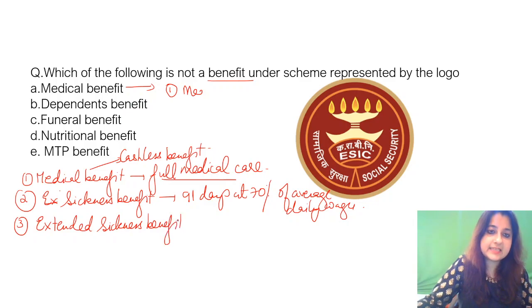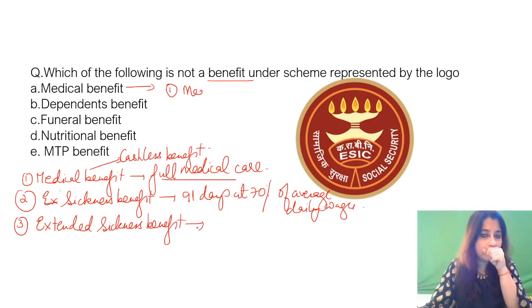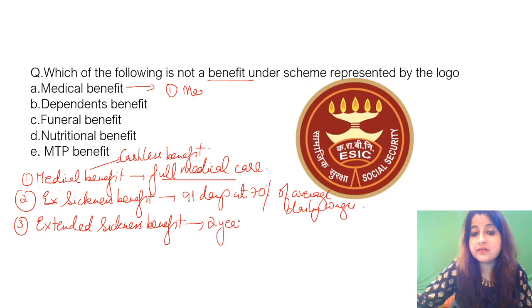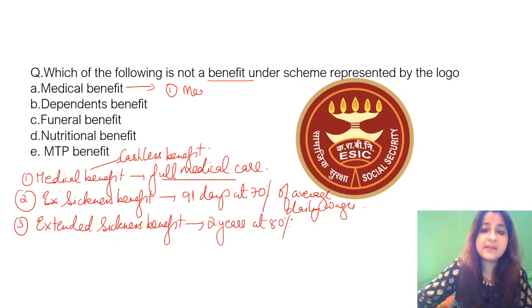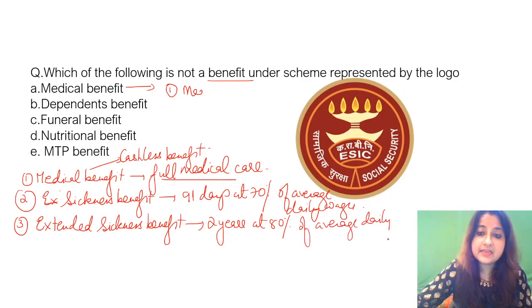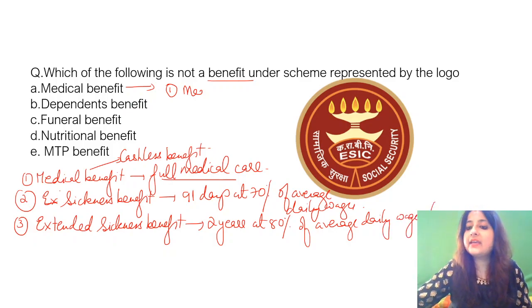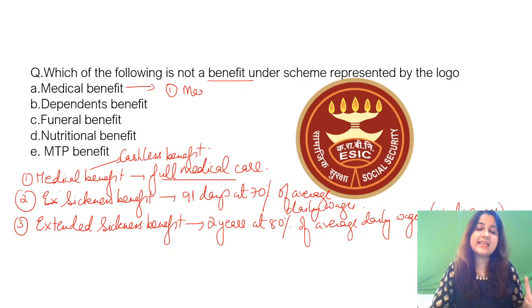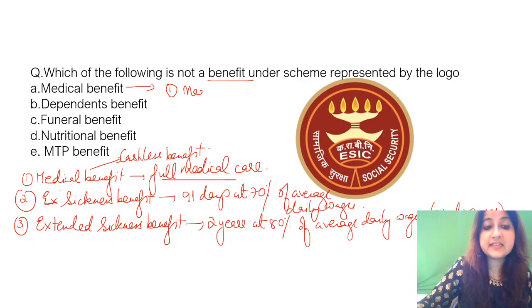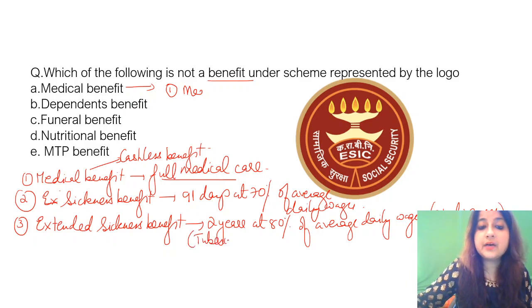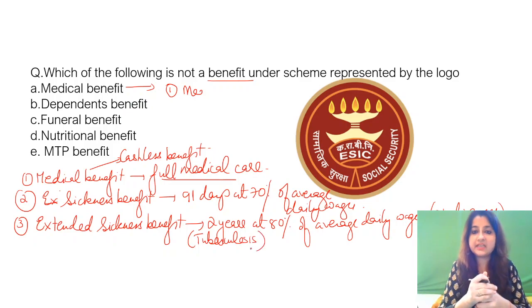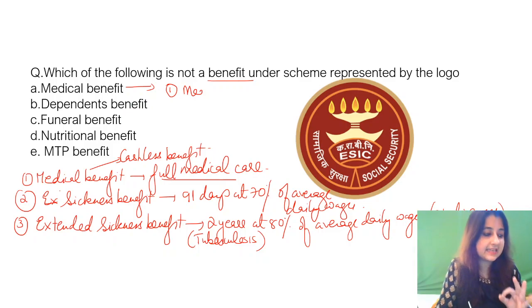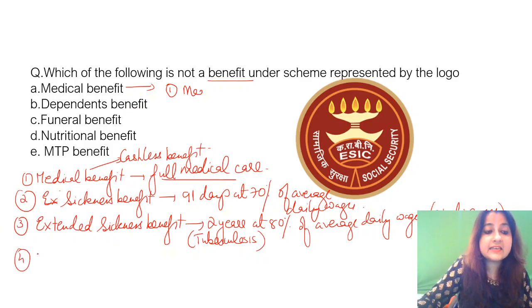Extended sickness benefit is provided for 2 years at 80% of average daily wages. There is a list of 34 diseases for which this extended sickness benefit can be claimed. One of the most commonly asked diseases in MCQs is tuberculosis — a person suffering from TB is eligible for extended sickness benefit under the ESI scheme.